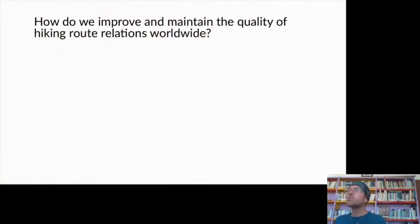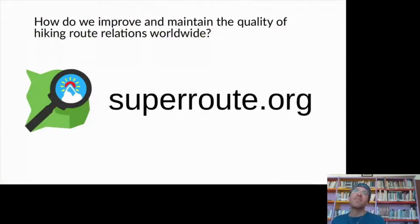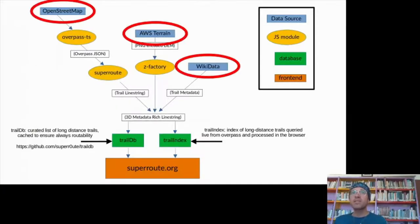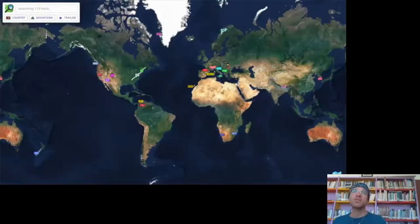Sometimes incorrect route topology prevents us from routing the trail into a single continuous line. So how do we improve and maintain the quality of these hiking route relations worldwide? That's what I want to present today — superroute.org, a tool to help us do that. It's built on OpenStreetMap, AWS terrain tiles, and Wikidata, all public and free data sources.